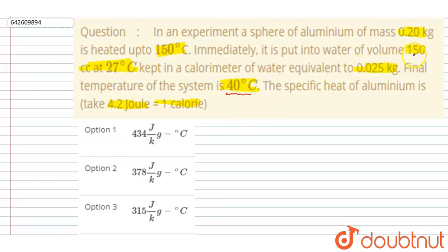You can see the volume of the water is 150 cc and the water equivalent of the calorimeter is 0.025. So the total mass of the water plus this calorimeter is...